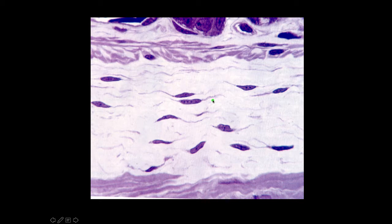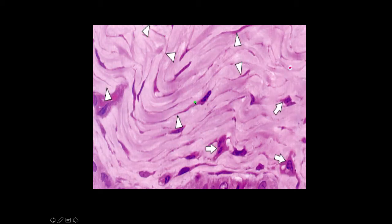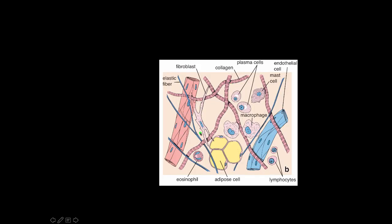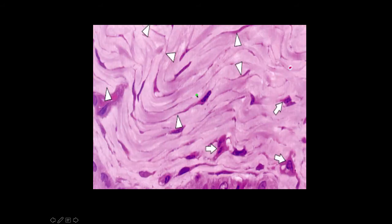Here are some fibroblasts in connective tissue — this is probably the submucosa of the GI tract. You can see the nuclei of these fibroblasts and the surrounding extracellular material. In another view, you can see the nuclei of the cells as well as these long spindly projections of the cytoplasm at the white arrowheads, which correspond to the spindle-like projections fibroblasts often have.